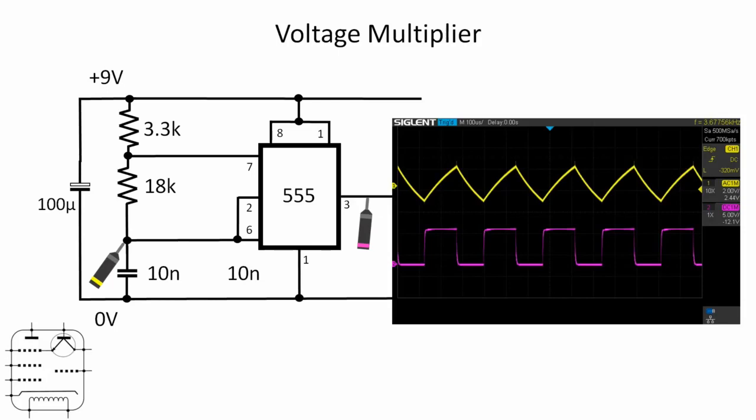Now originally the voltage multiplier circuit was designed with an AC supply in mind but using the pulses off a 555 is just as effective and it allows us to generate voltage multiplication using a DC source.